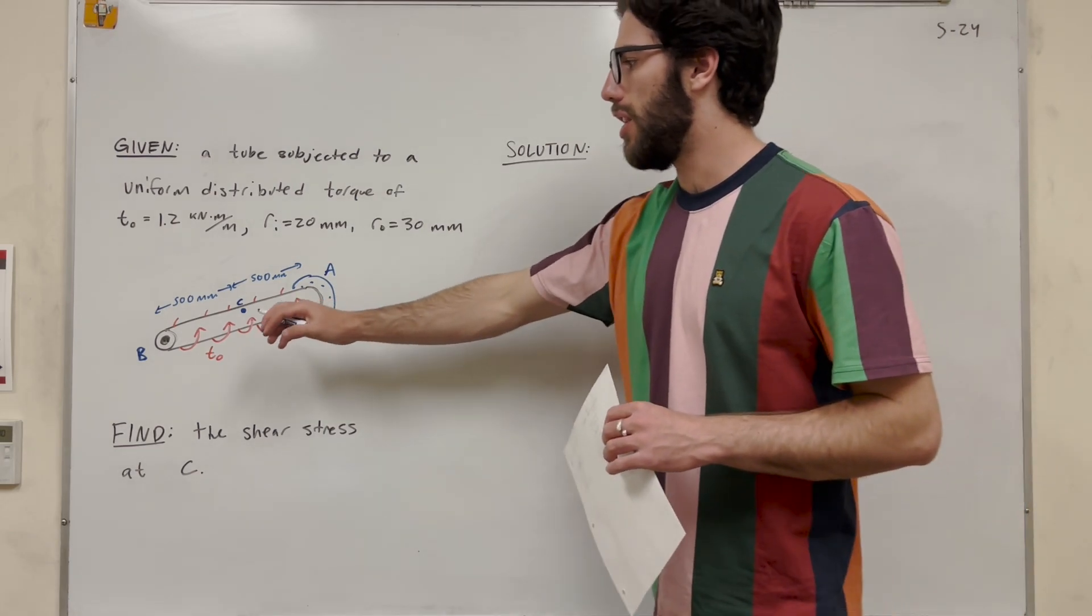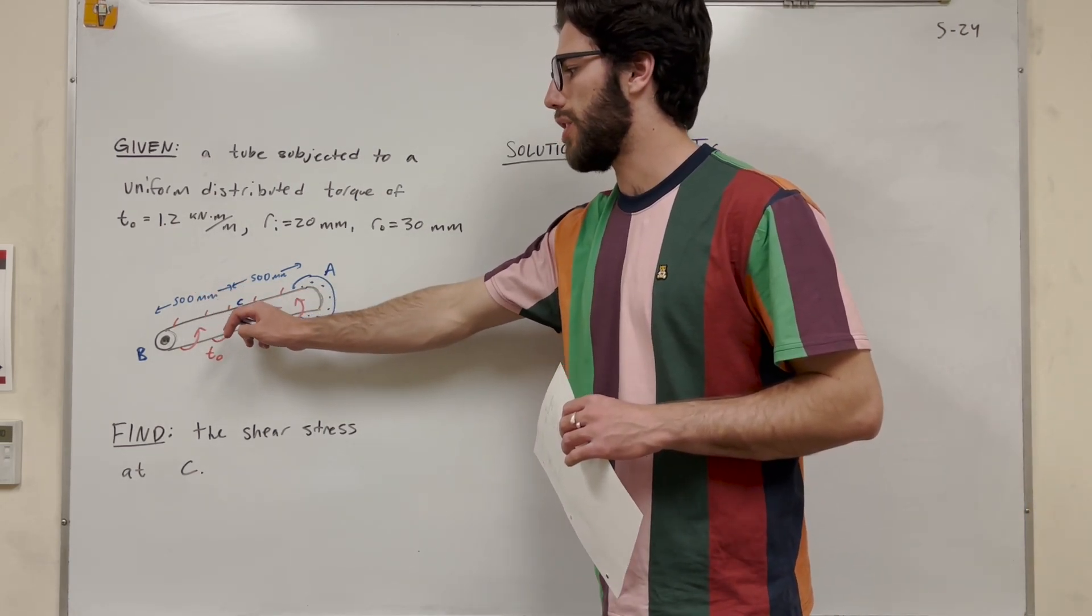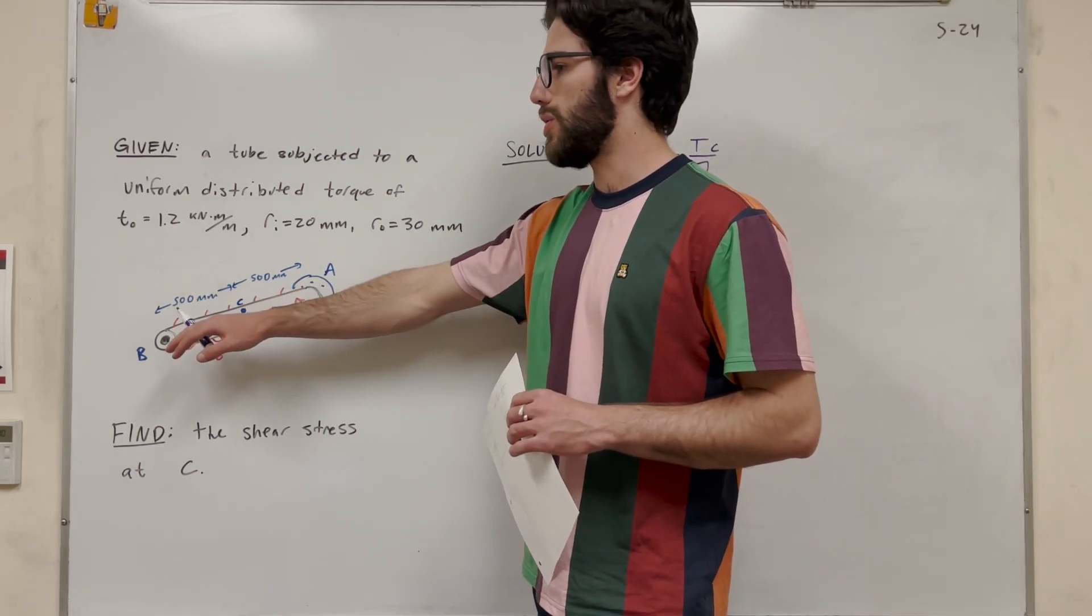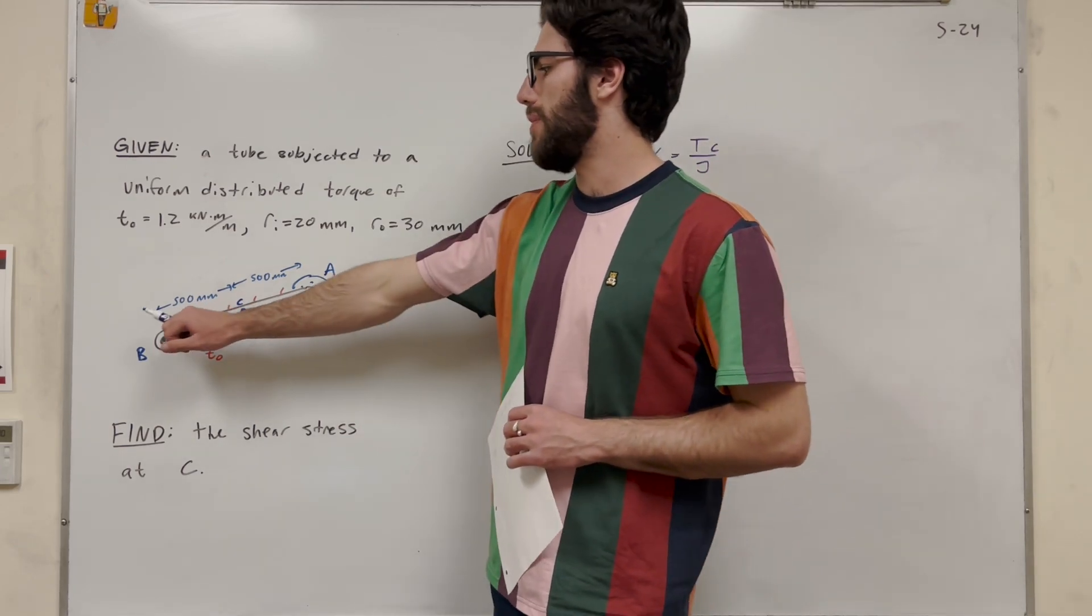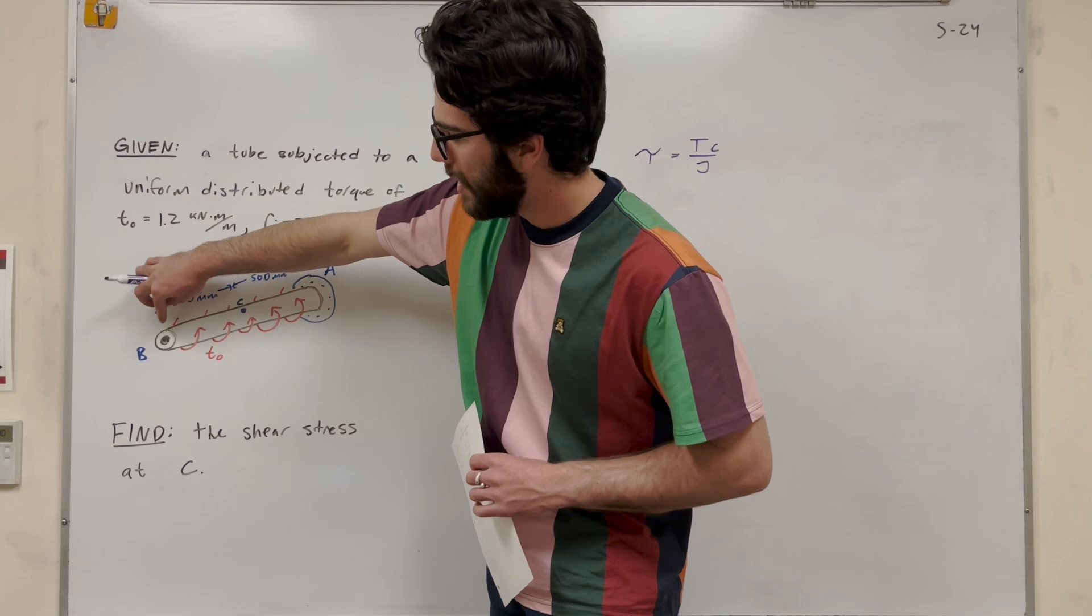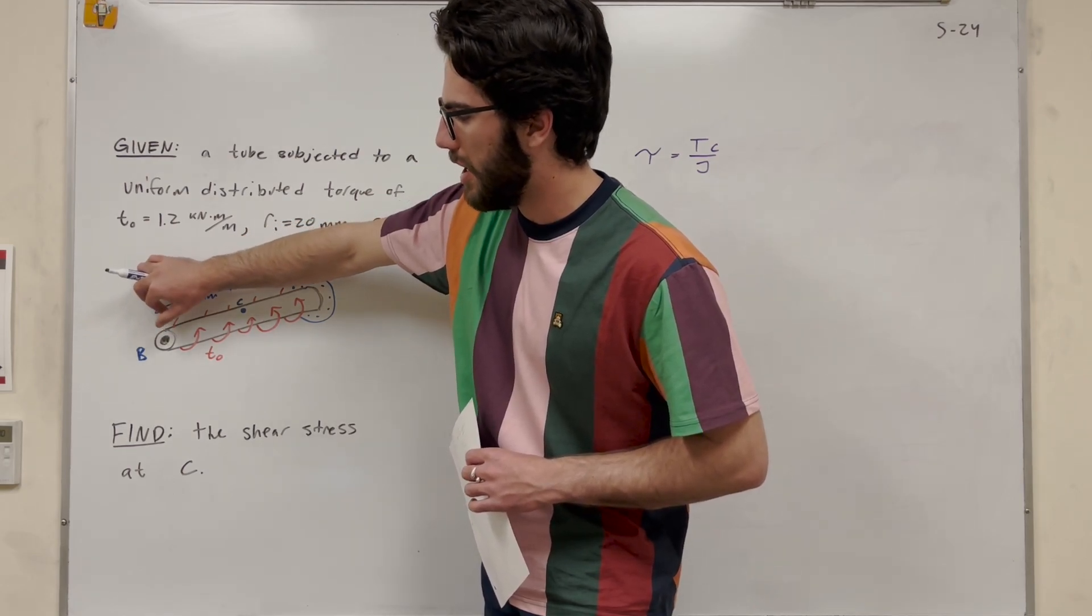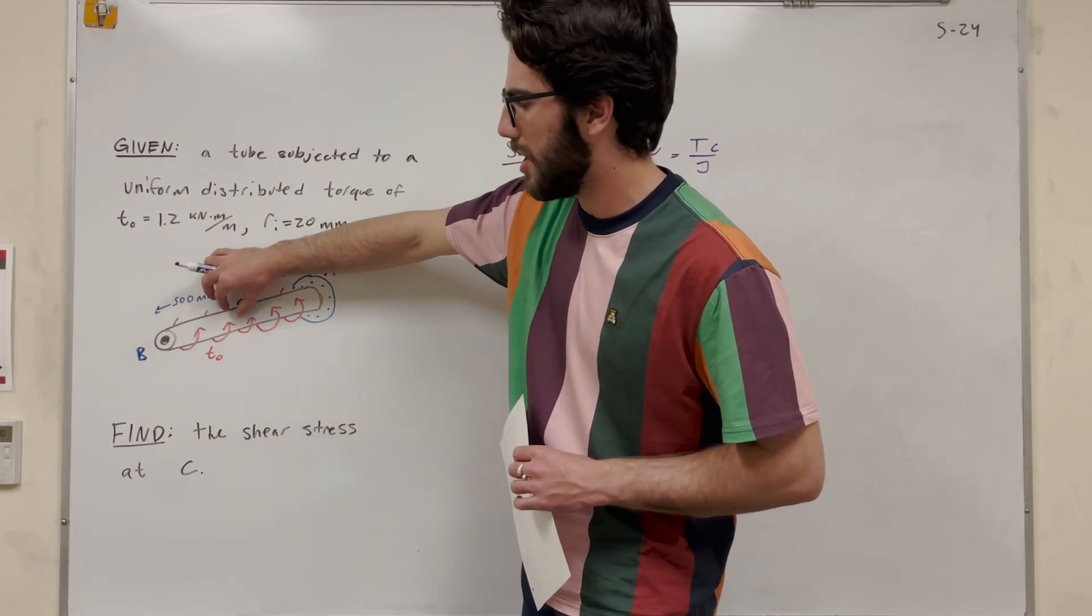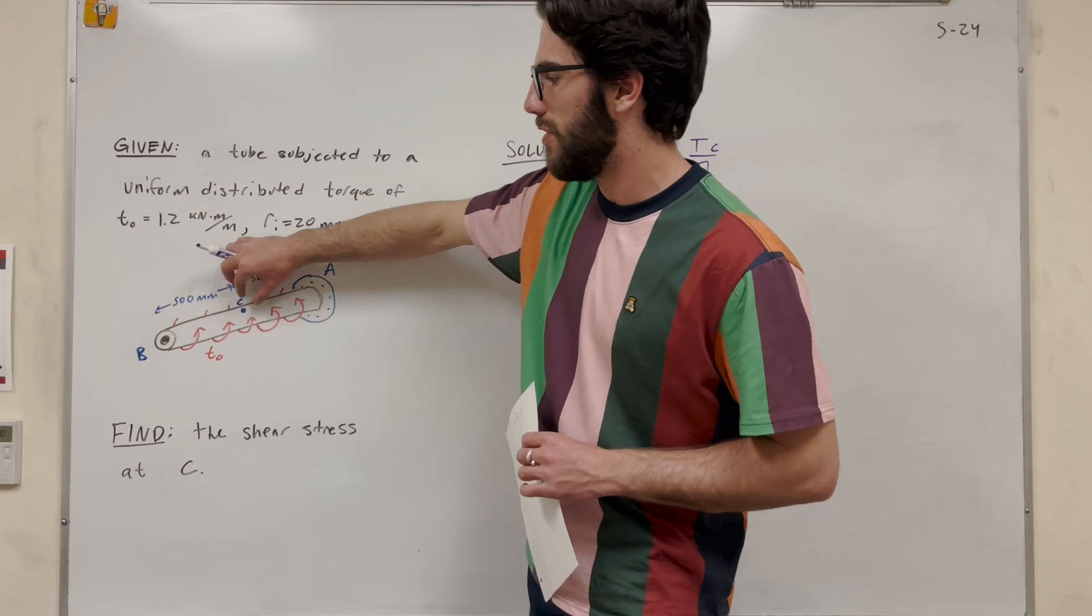So if you're looking at this rod, this constant applied torque is being applied to the end. And when you're going to find what the torque is at a point, you're going to start at the free end, basically. You're going to see what is happening here where there's no torque. So at B, there's no torque acting on it. It's free to move.